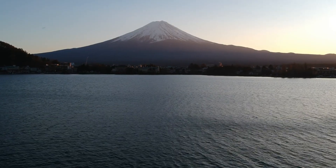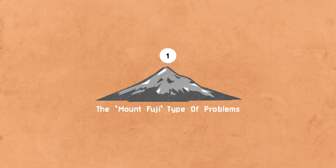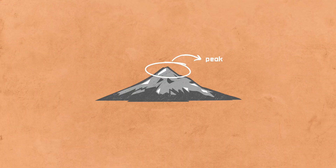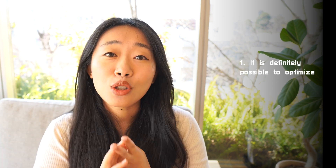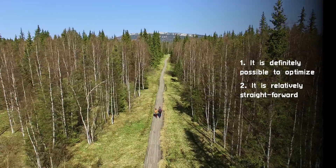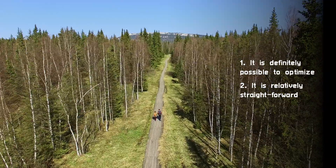Come to Japan and look at Mount Fuji. This is our first type of problem, and as you see, it's got this iconic cone shape, iconic pyramid shape with one summit, one peak on this mountain. So when problems are like Mount Fuji, one, it is definitely possible to optimize because there's one peak, and two, it is relatively straightforward. You just have to go up.